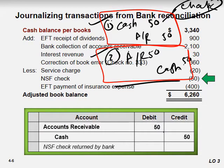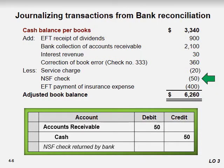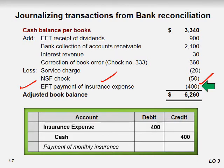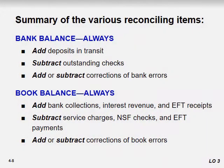The NSF reverse entry is Accounts Receivable $50 to Cash $50. Our last entry is the EFT payment of insurance expense. Since it's an expense paid through our bank account (cash book), we record: Insurance Expense to Cash. This is how we journalize the entries for the cash book side.